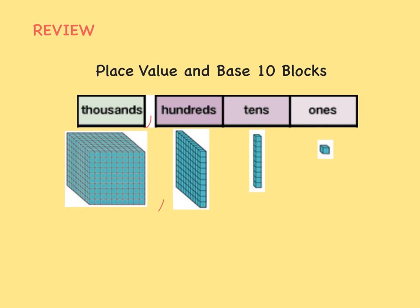Well, this should look familiar. We've already explored place value and how you can use base 10 blocks to represent each place. The 1's place has 1 unit. The 10's place has 10 units. The 100's place has 100 units. And the 1,000's place has 1,000 units.